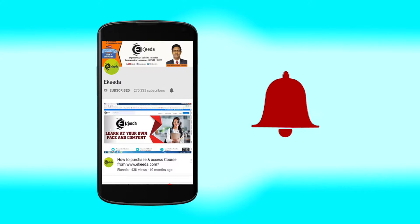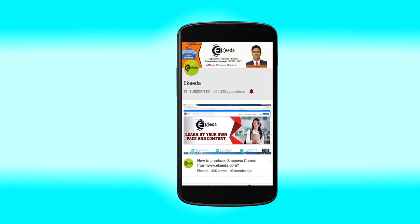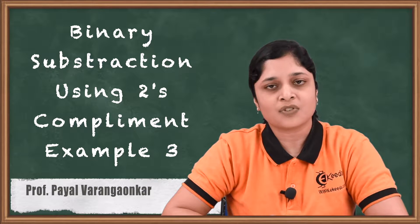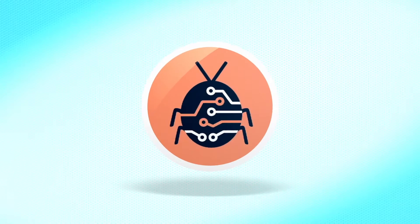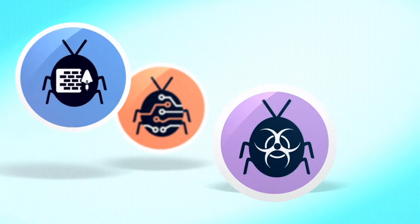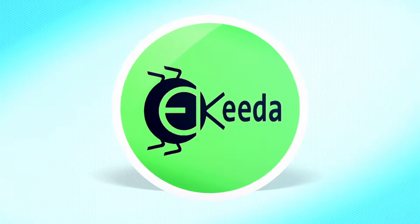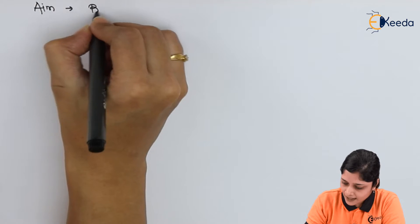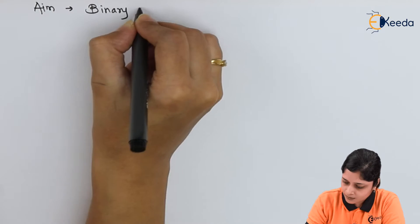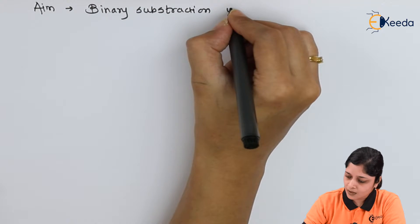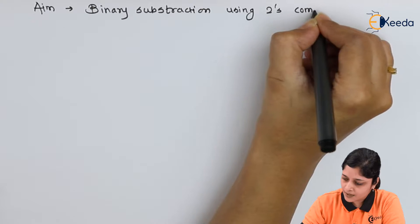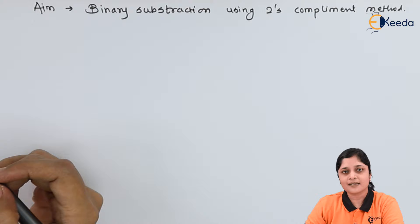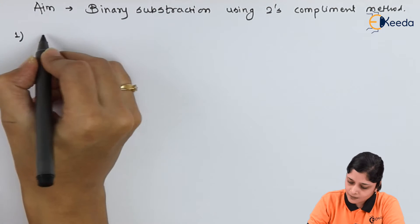Click the bell icon to get latest videos from Ikeda. Hello friends, we are going to discuss 2's complement method for binary subtraction. Your aim is binary subtraction using 2's complement method. Let's take one example: -5 - 9.